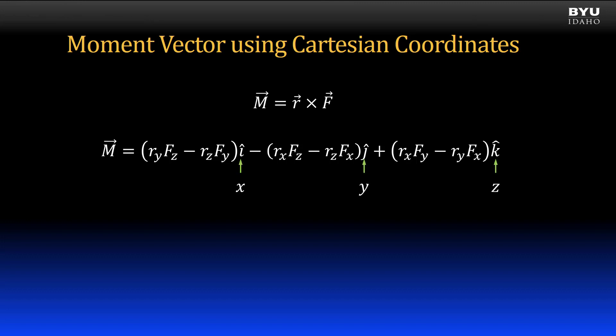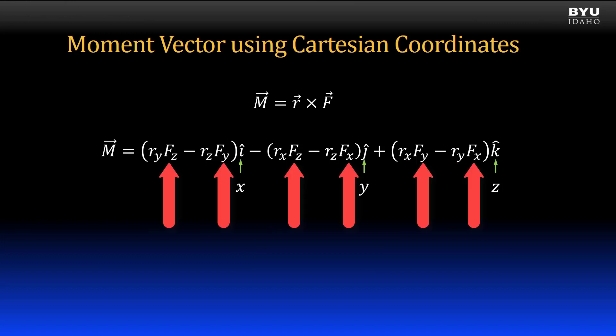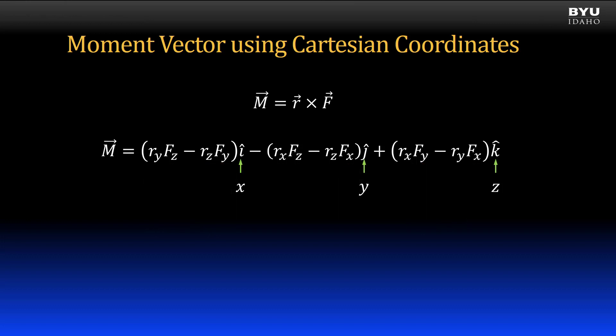First, let's note that the i, j, and k directions represent the x, y, and z directions. Every single term in this equation has three components: a moment component in the x, y, or z direction; a position vector component in the x, y, or z direction; and a force vector component in the x, y, or z direction. Each term has all three directions represented. For example, the first term is for the x direction moment component, with a y direction position component and a z direction force component — x, y, z.